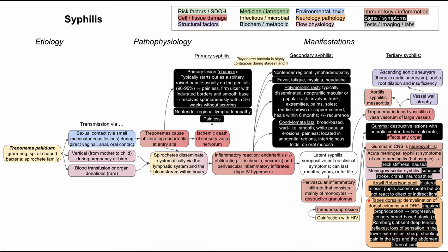Lastly for neurosyphilis, you can have tabes dorsalis. This is demyelination of the dorsal columns and the dorsal root ganglia. This can result in impaired proprioception, which can progress to sensory broad-based ataxia. The patient will have a positive Romberg sign. They might also lose their deep tendon reflexes, lose sensation in their lower extremities, and have sharp shooting pains in the legs and abdomen. They can also develop Charcot joints of the lower extremities.